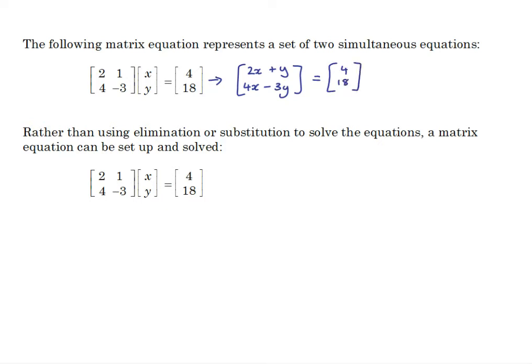That is equal to 4 and 18. We now have a 2 by 1 matrix equal to another 2 by 1 matrix so we can simply equate the elements. We get that 2x plus y equals 4 and 4x minus 3y equals 18, and so we have two simultaneous equations.